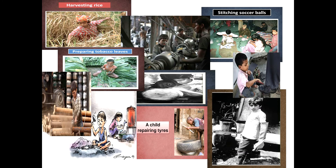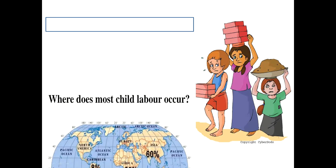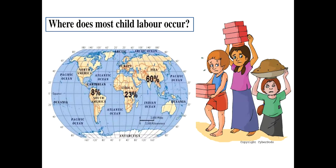Here are some examples of work done by children that is harmful. Children are working with heavy machines, metals, harvesting, stitching, polishing, and the most dangerous of all — preparing tobacco leaves — which is very harmful for their lives. This is how child labor mainly occurs, primarily due to poverty.